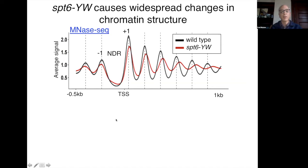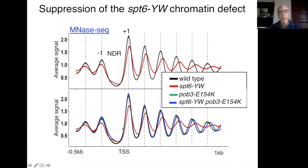When we combine SPT6-YW with the Pob3 suppressor, the double mutant shown in blue is almost superimposable on wild type in black. So we see very strong suppression of the SPT6-YW chromatin defect by the Pob3 mutation.